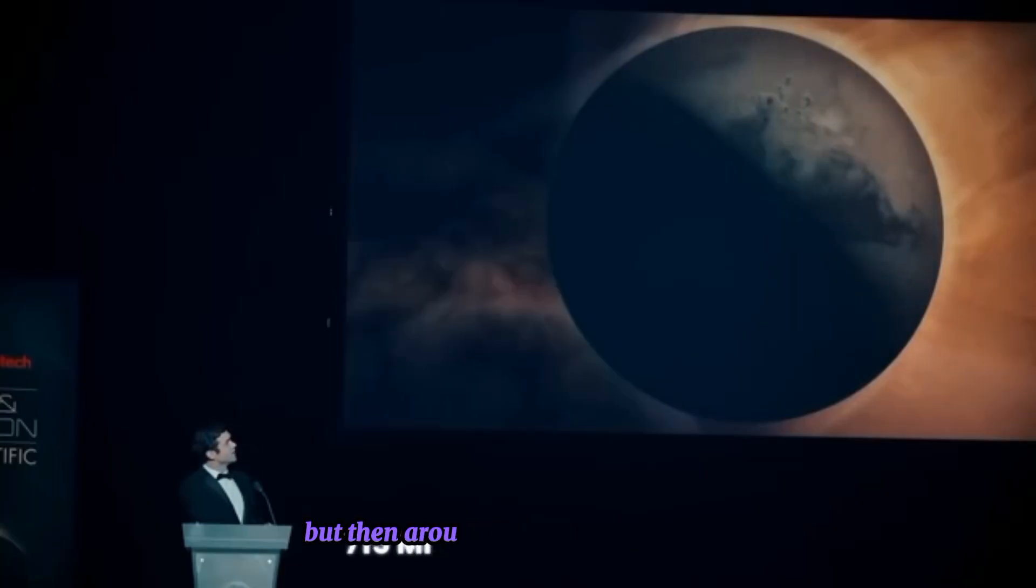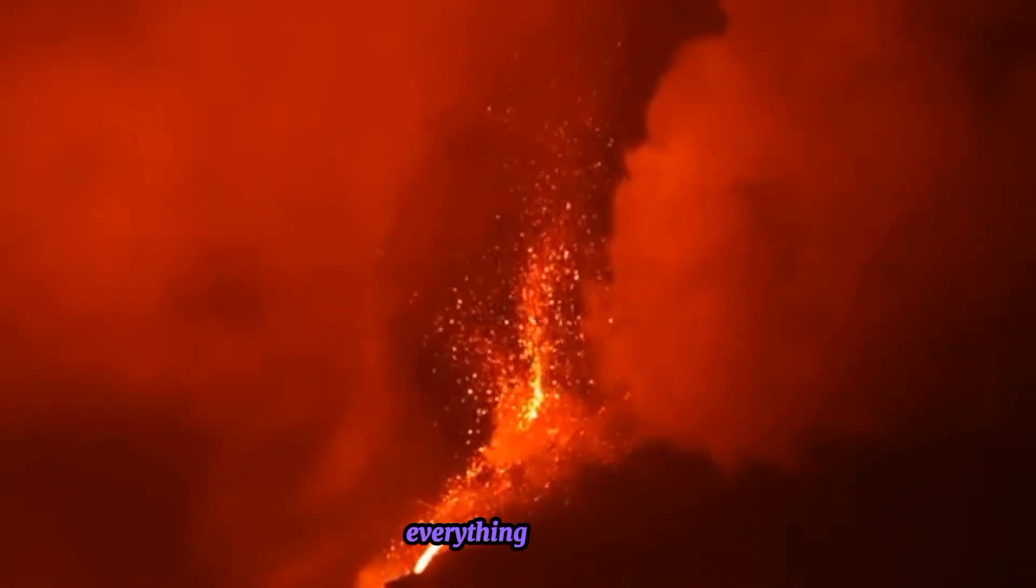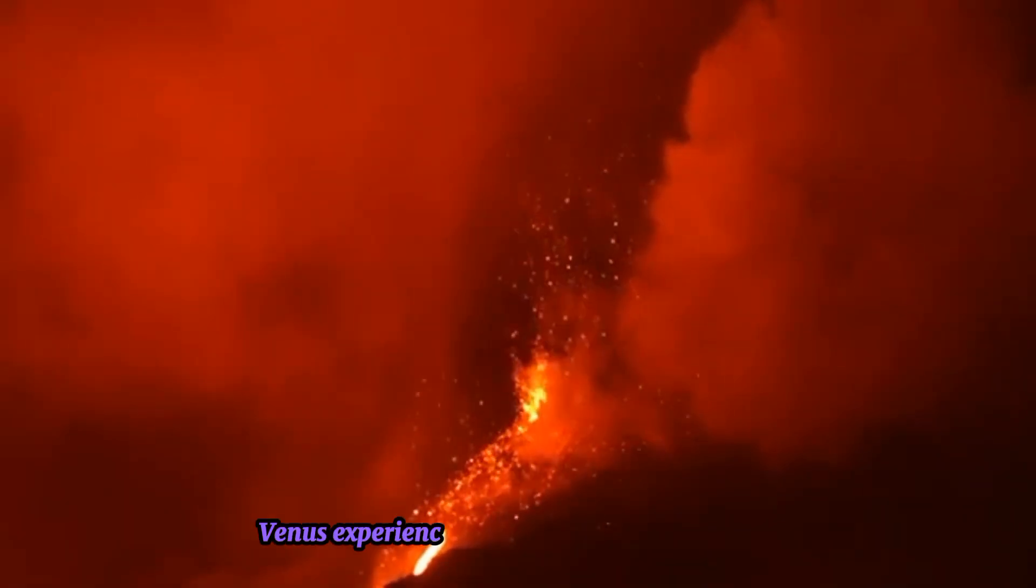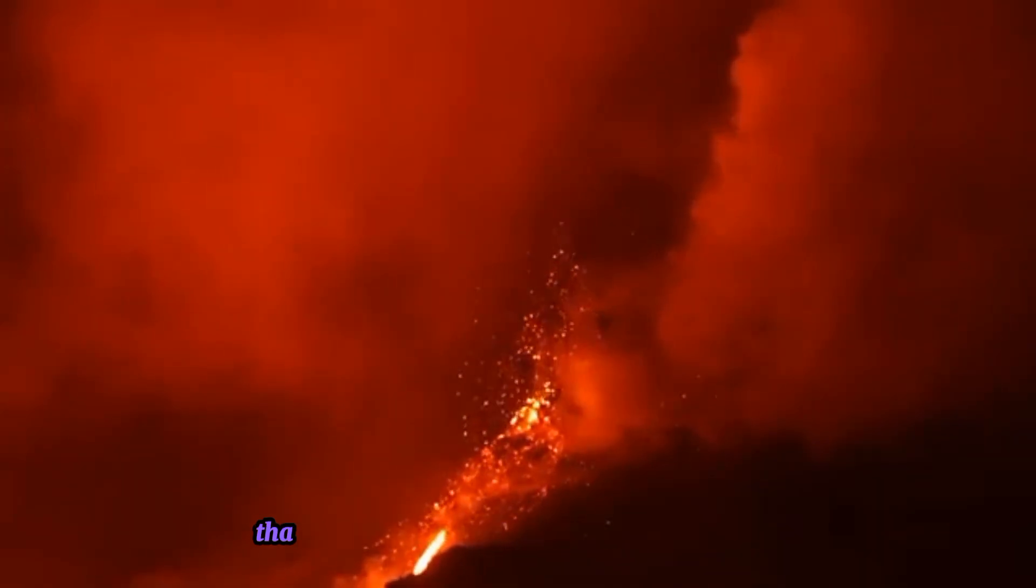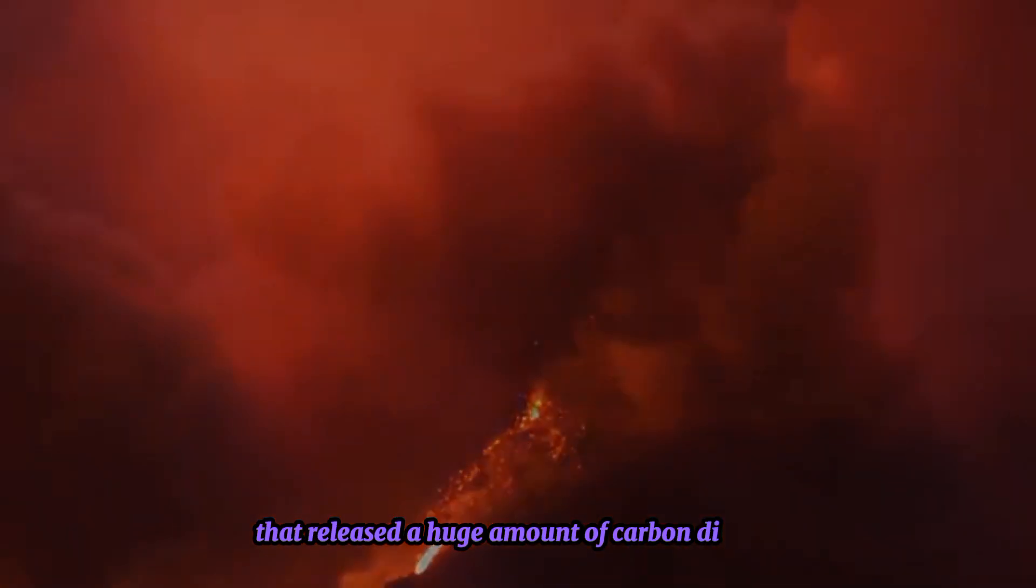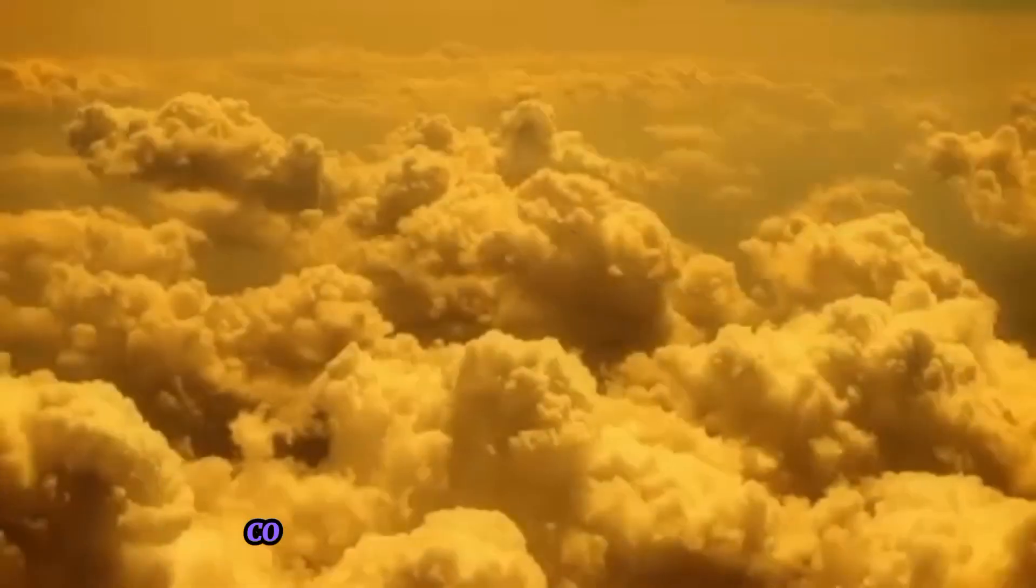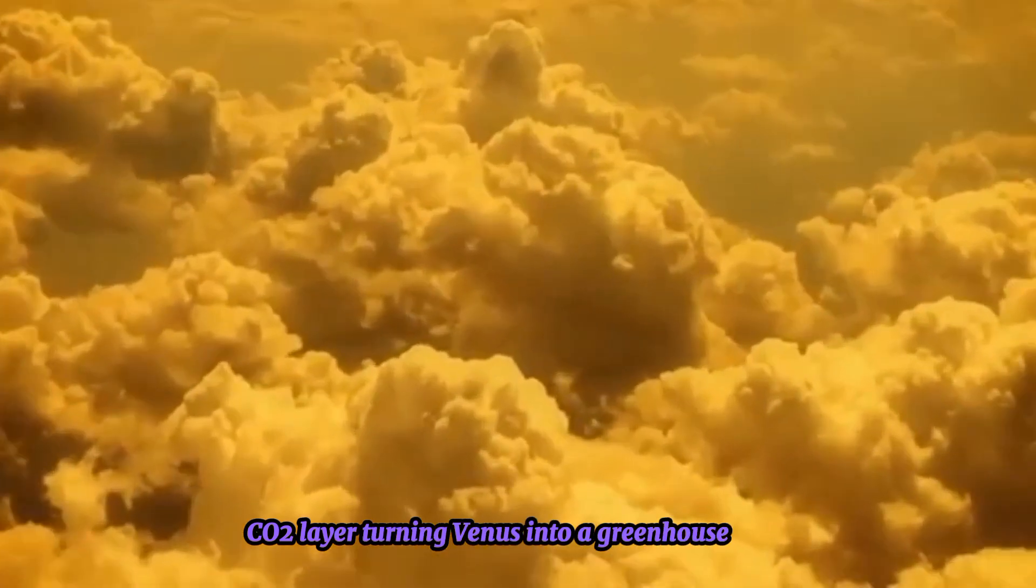But then, around 715 million years ago, everything changed. Venus experienced massive volcanic eruptions that released a huge amount of carbon dioxide into the atmosphere. The heat from the Sun got trapped by this thick CO2 layer, turning Venus into a greenhouse oven.